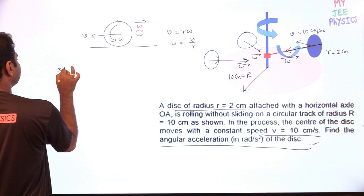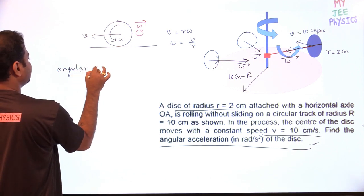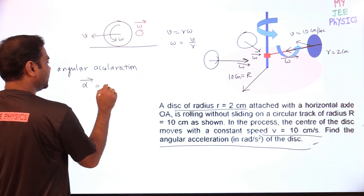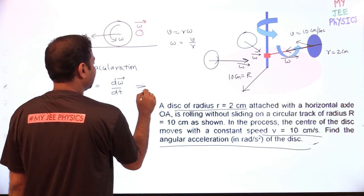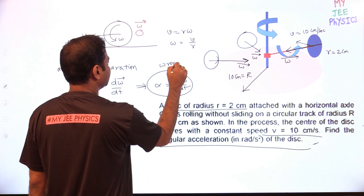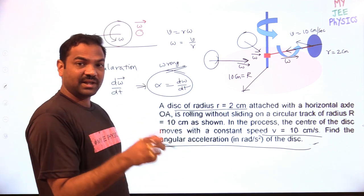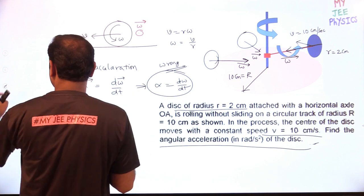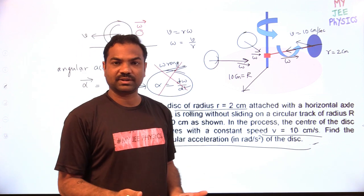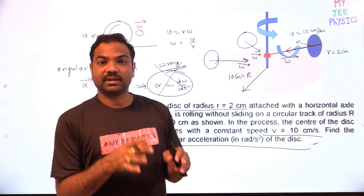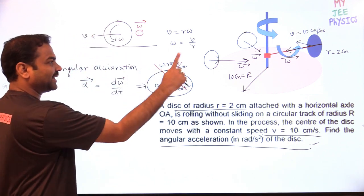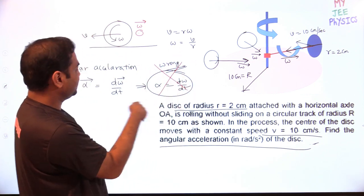How do we write the angular acceleration of the disc? We write alpha bar = d(omega bar)/dt. If you write it as scalar alpha = d(omega)/dt, that would be wrong. Because the magnitude of omega is constant, you might think d(omega)/dt = 0 and alpha = 0 — but this is not the case. This scalar form is valid only when omega and alpha are in the same direction. Here, the direction of omega keeps changing, and that direction change causes the angular acceleration.